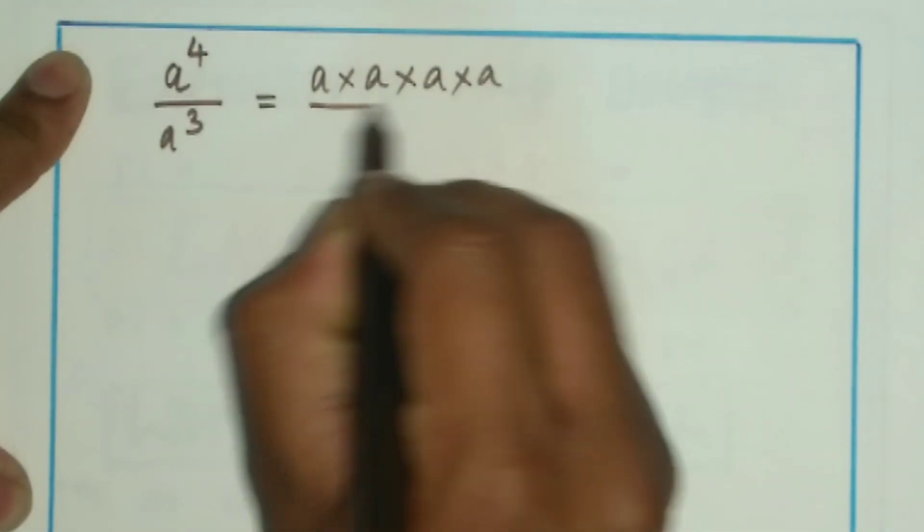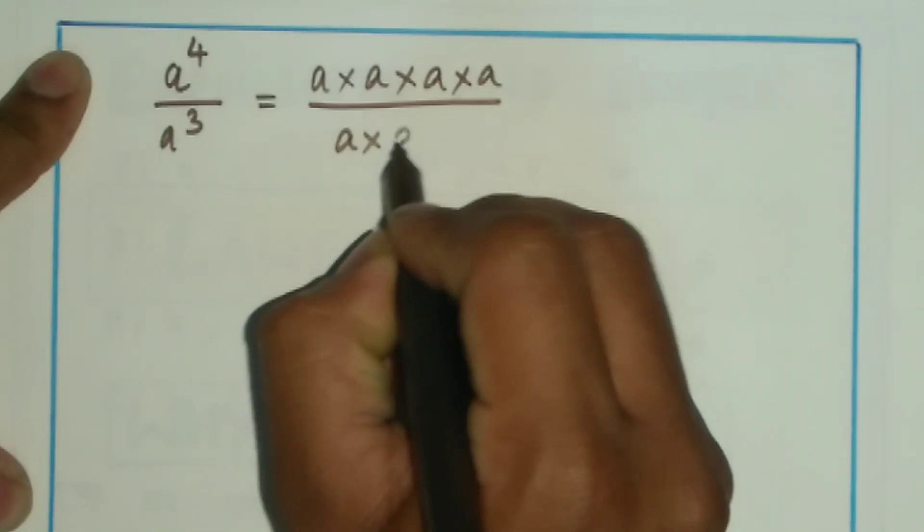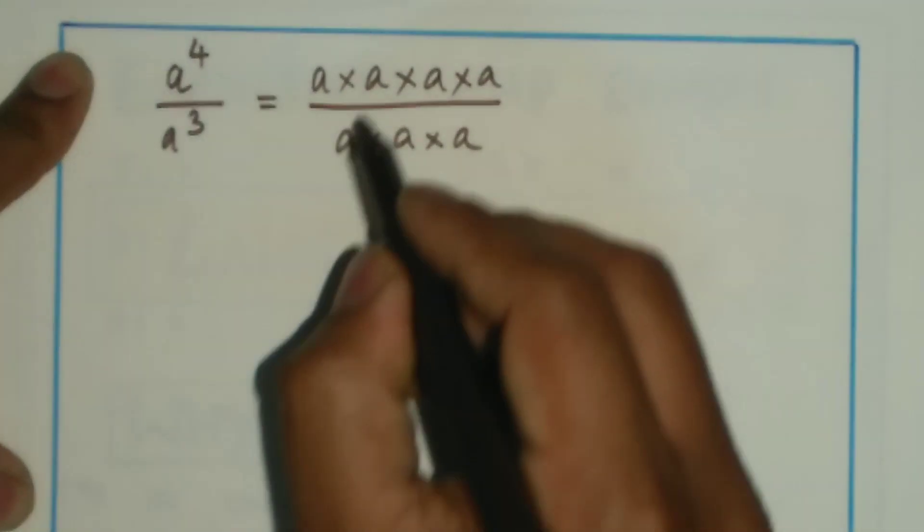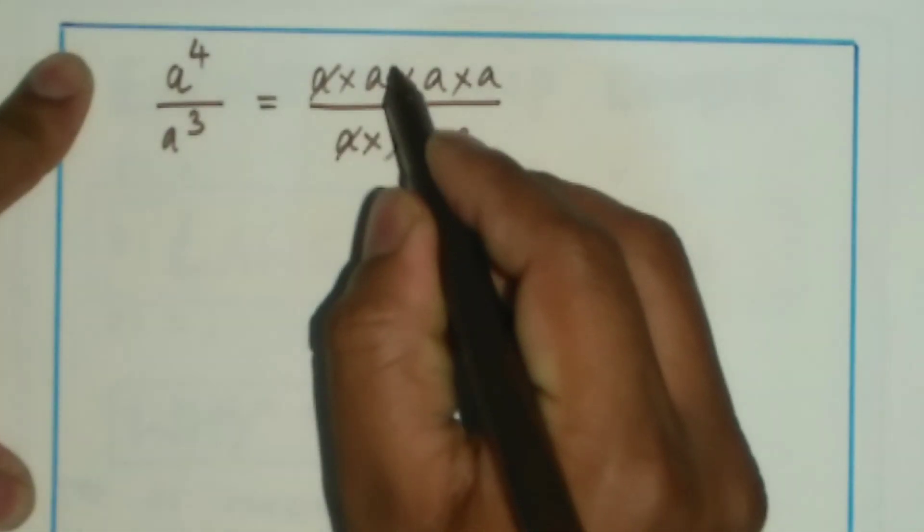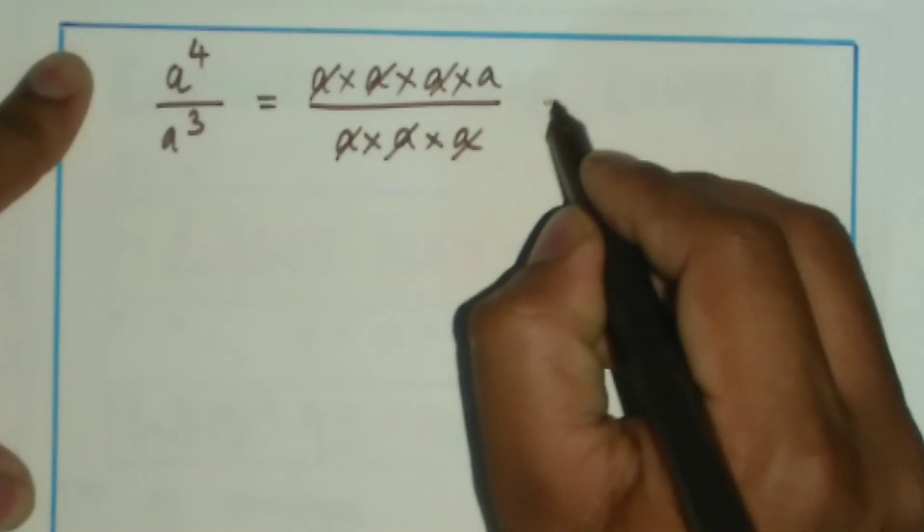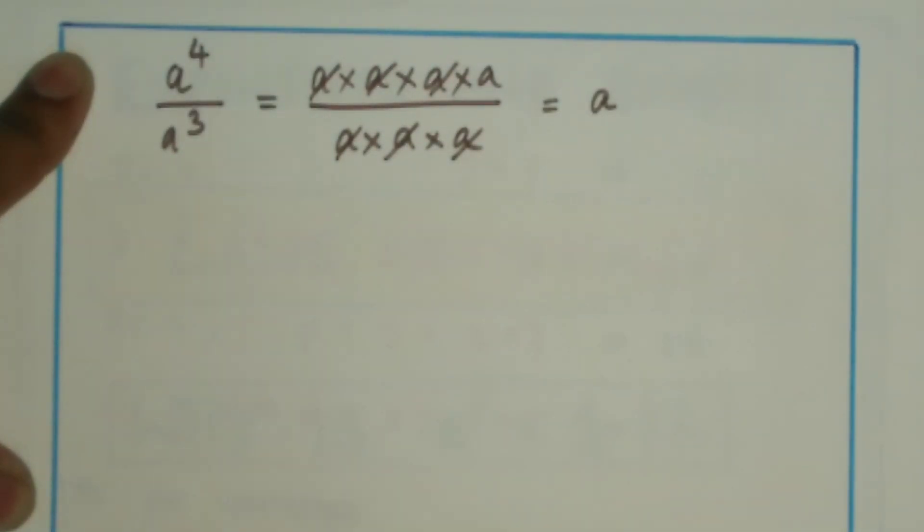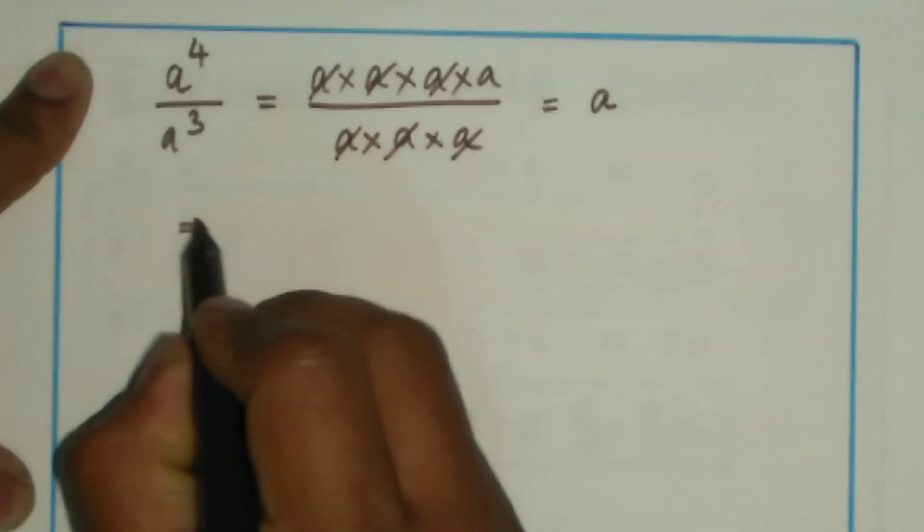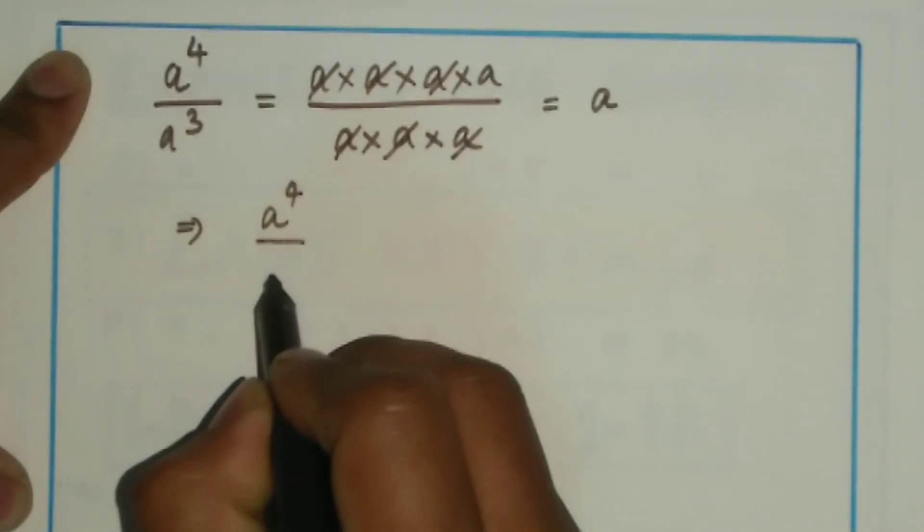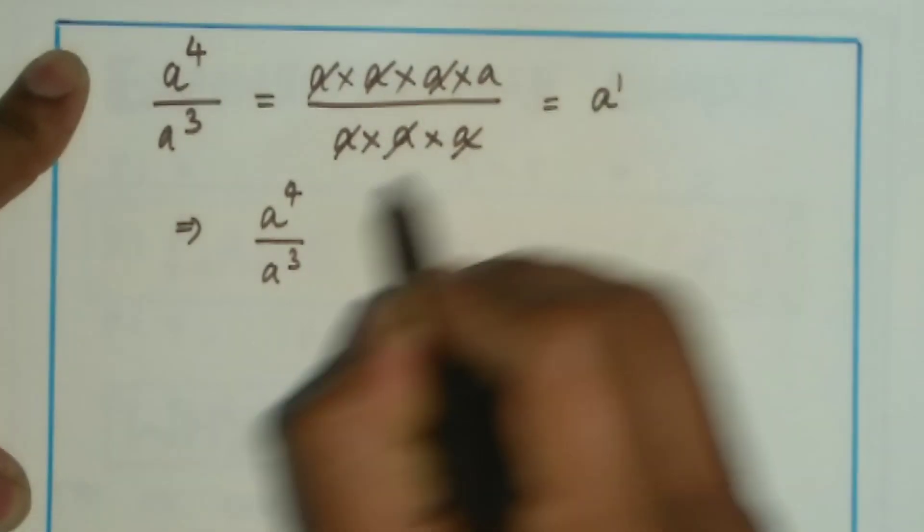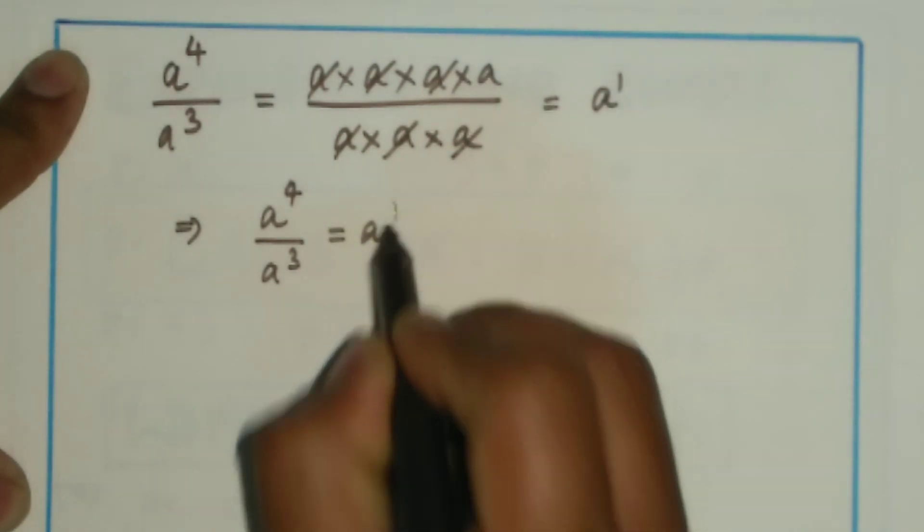I write a 4 times, and in the denominator I write a 3 times. On cancellation I am left with 1a in the numerator. So I can write this as a power 4 by a power 3 equals a power 1.